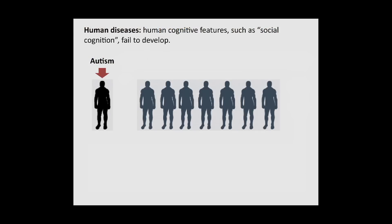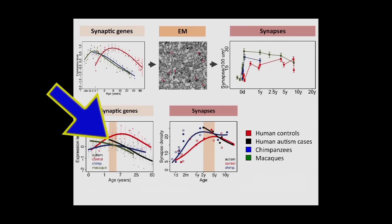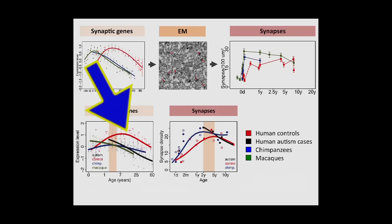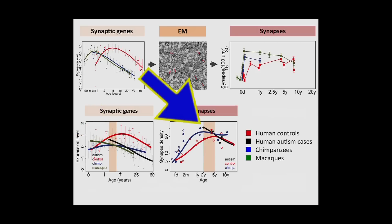And there is such a disease — it's autism. One of the effects of autism is really disruption of social cognition — social cognition fails to develop in autistic patients. Our hypothesis is that in autism, this kind of neotenic shift in synaptogenesis will be disrupted. And this is indeed what we see: when we repeat the experiment and add human autism cases, the autistic curve is dramatically different from the healthy human developmental curve — it falls back into the ancestral pattern of development. And the same you see for synaptic connections, although you cannot measure it at the early ages because autism can only be diagnosed from two years of age. You can see the dramatic disruption of this neotenic pattern.